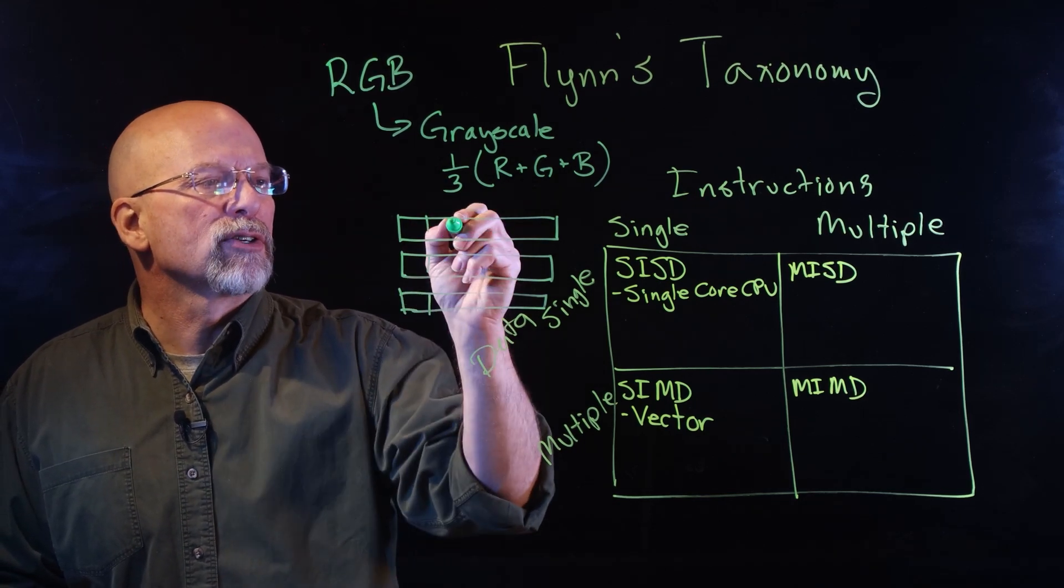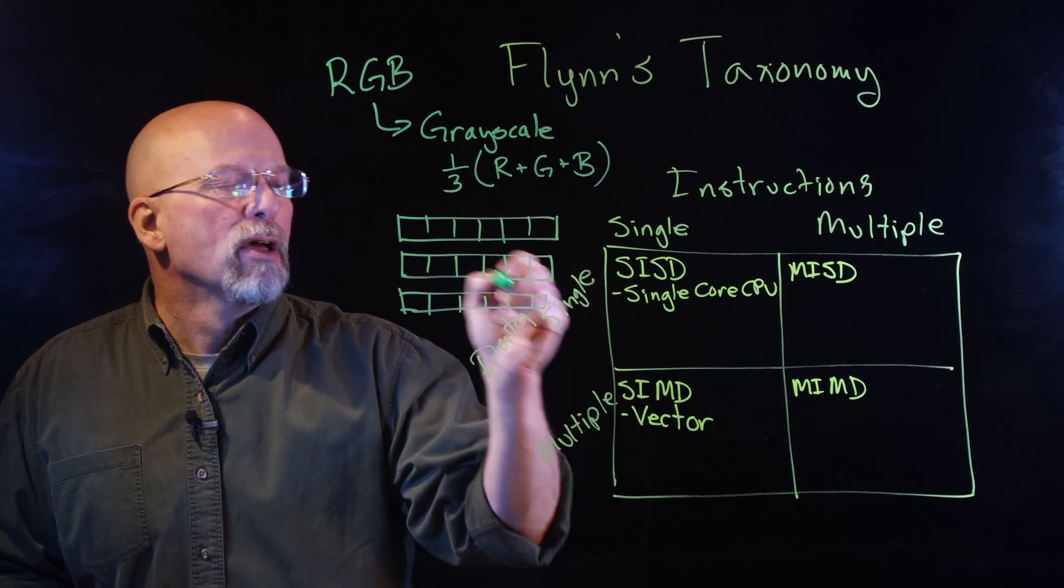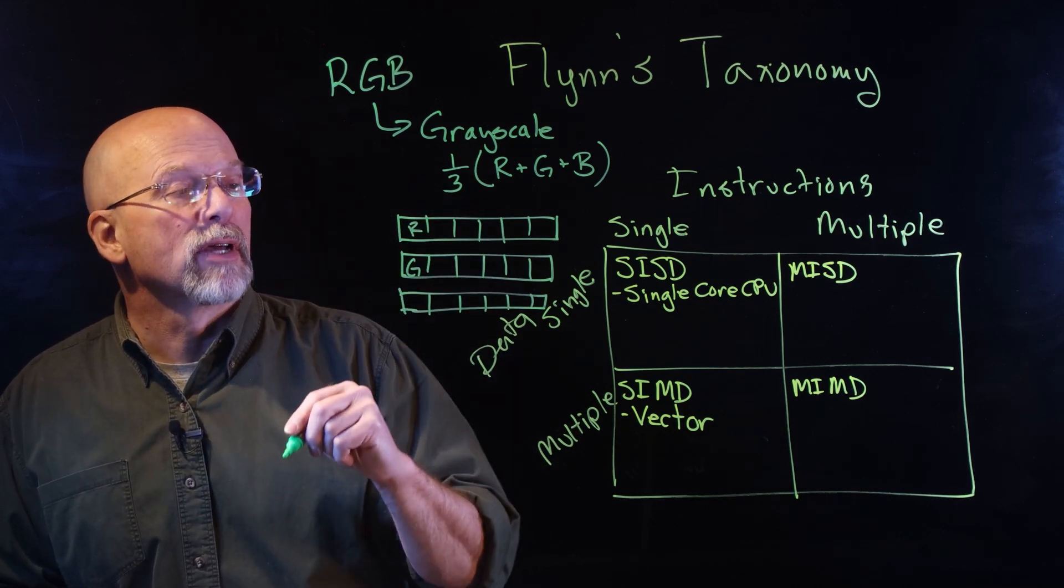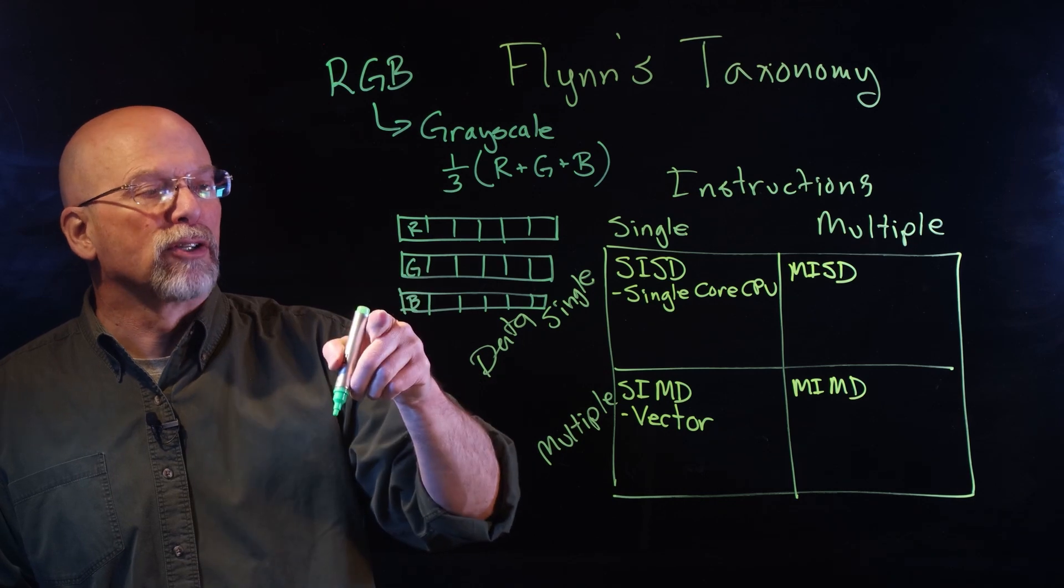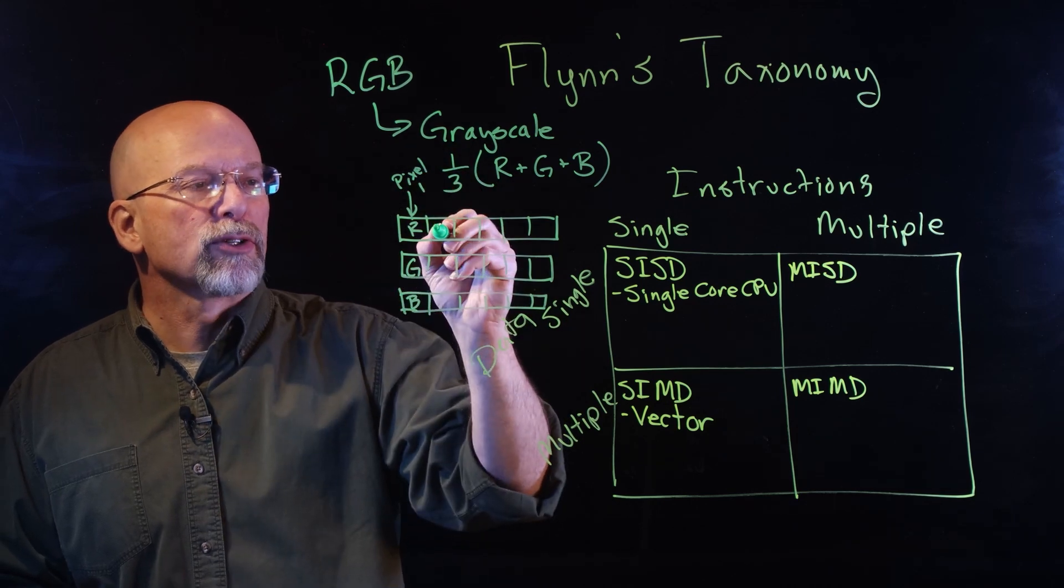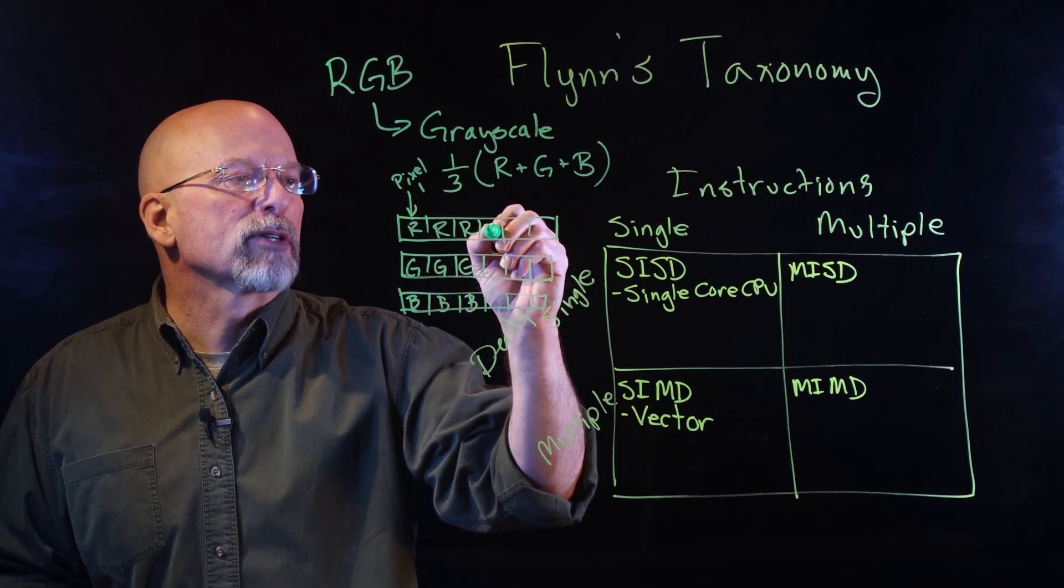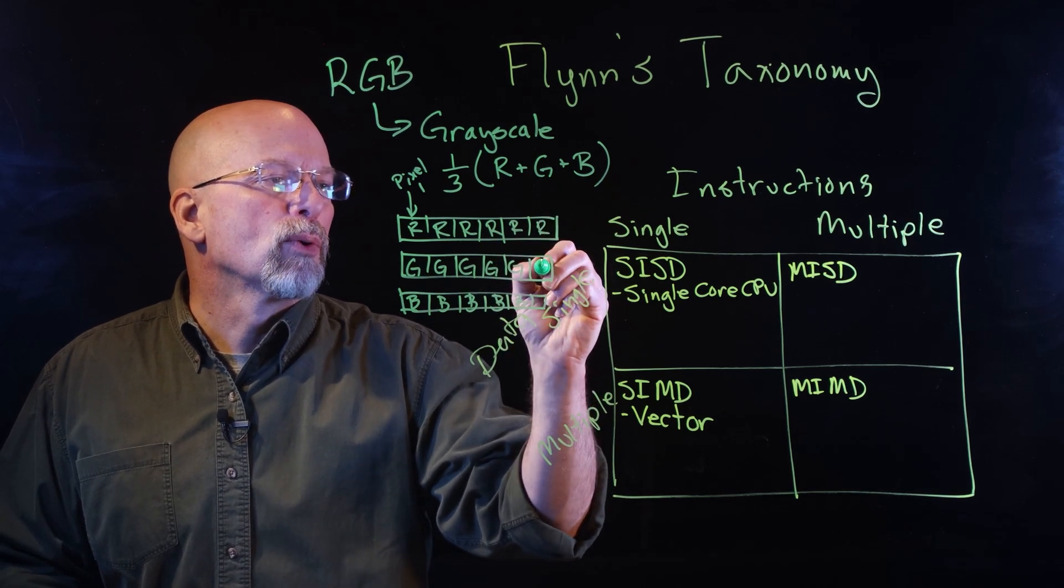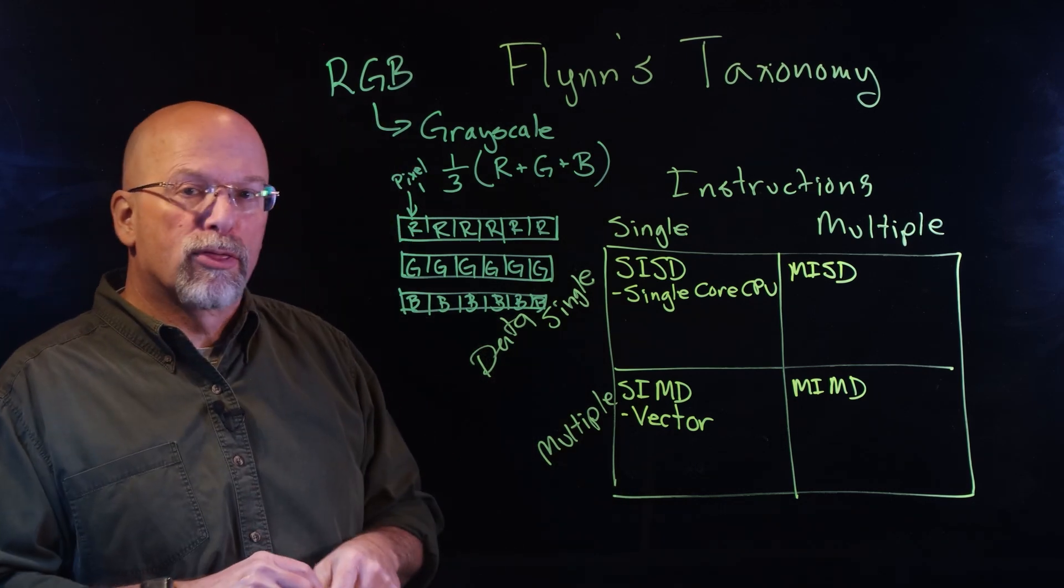The vectors are divided up so that the amount of red for the first pixel is in the first position of the first vector. The amount of green is in the first position of the second vector, and the amount of blue is in the first position of the third vector. So this is pixel one. Pixel two also has red, green, blue. Pixel three also has red, green, blue. Pixel four has red, green, blue. And you get the idea. So we have, in this case, six of our pixels represented or loaded into three vectors.